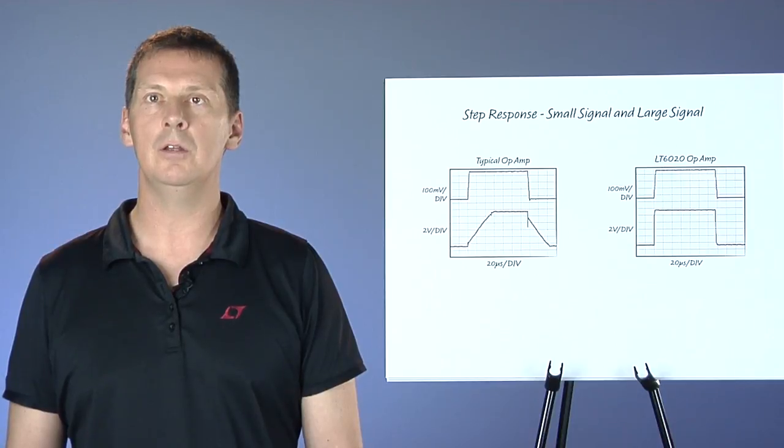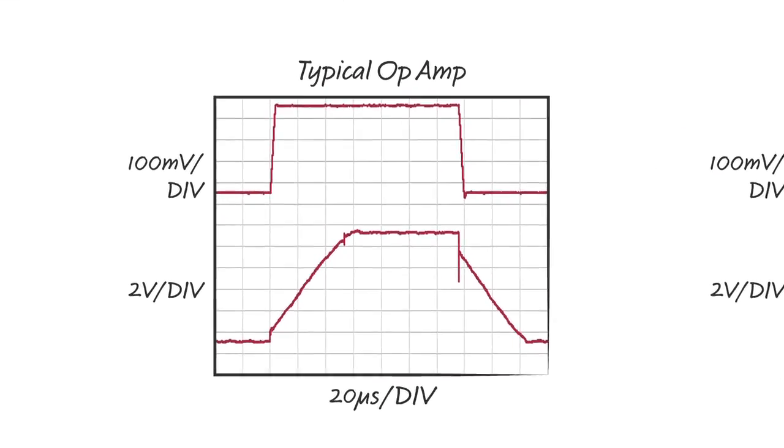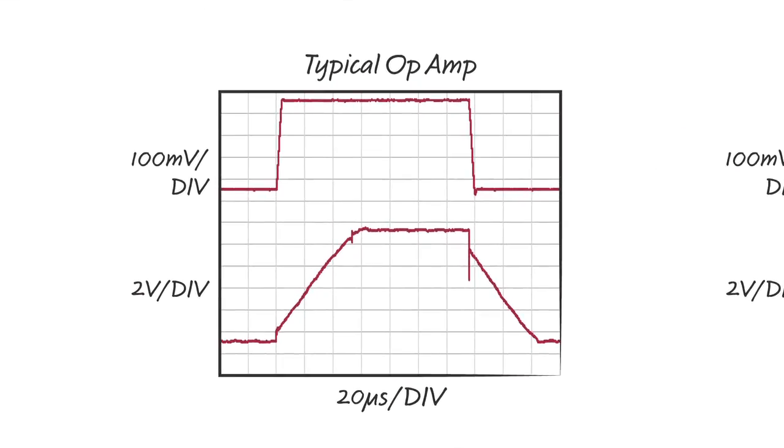In fact, the LT6020 has internal circuitry that automatically adjusts the slew rate based on the size of the input step. As a result, large input steps are processed just as fast as small input steps. The waveforms in these graphs show the impact on transient step response compared to a conventional op-amp of similar power consumption. For conventional op-amps, the large signal response is much slower than the small signal response.